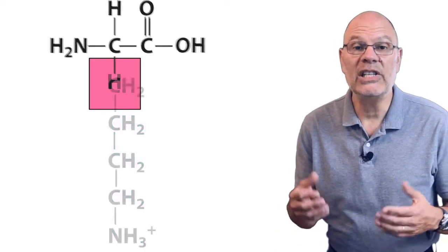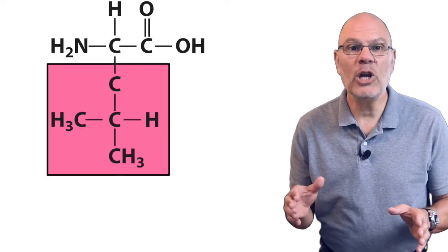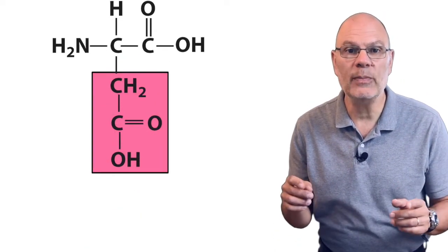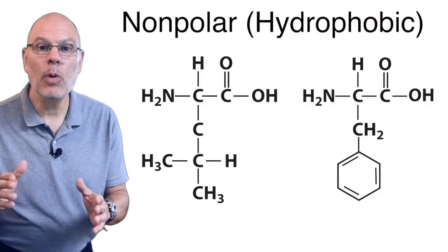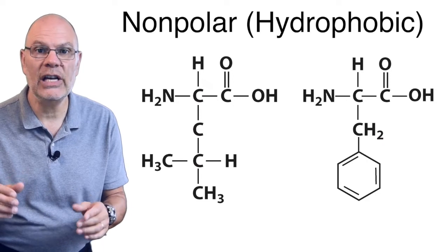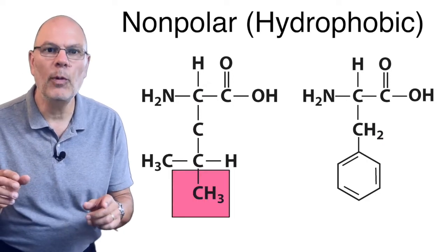Each of the 20 amino acids has a different R group, and based on the R group's chemistry, we can organize amino acids into one of four types. Some amino acids have nonpolar or hydrophobic side chains. Just look for a methyl group or a carbon ring.